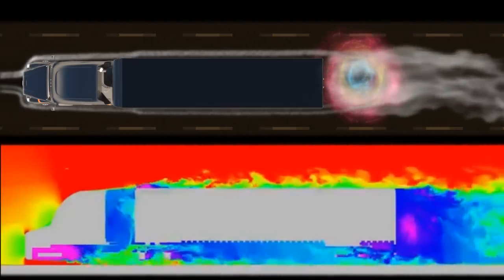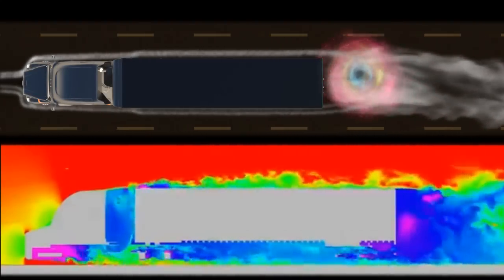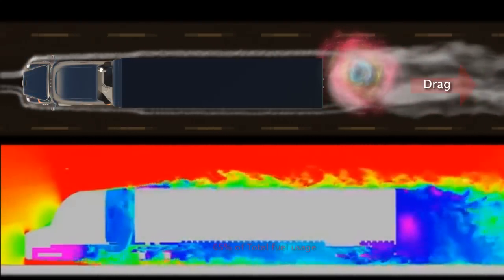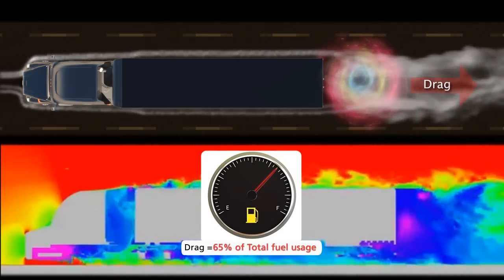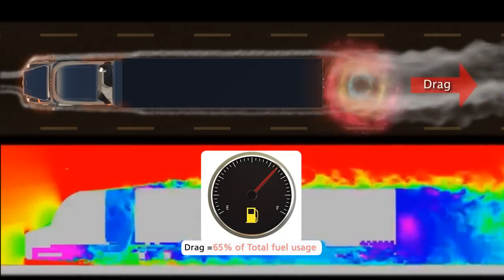One of the major constraints on improving fuel economy for transport vehicles has been aerodynamic drag, which contributes over 65% of fuel consumption at highway speeds.